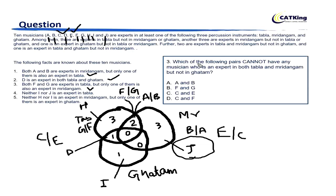Question 3: which of the following pairs cannot have any musician who is expert in both Tabla and Mridangam but not in Ghatam? For pair A and B — one of them can be in Tabla-Mridangam, so this is not the answer. For F and G — either F or G is in Tabla-Mridangam, so this is not the answer. For C and E — if C is in Tabla only, E is in Mridangam only, and vice versa, so neither C nor E would ever be in Tabla-Mridangam. So the answer is C and E — option C.